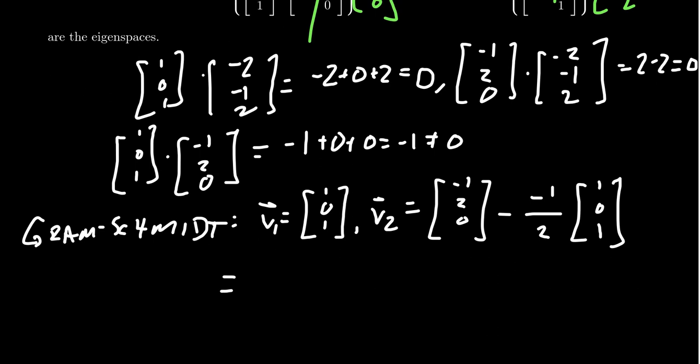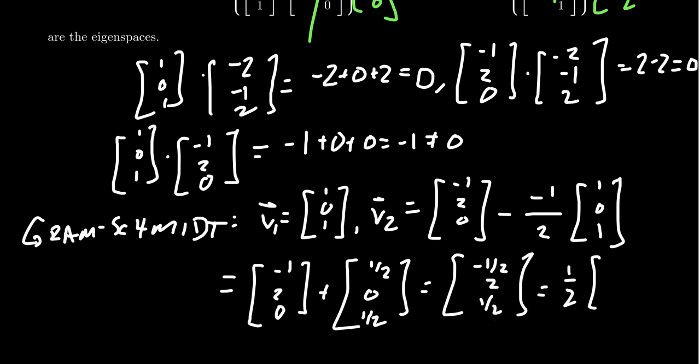If we continue to simplify this, we will end up with negative 1, 2, 0. And then we're actually adding 1 half. So you get 1 half, 0, and 1 half right there. So combining those together, you end up with negative 1 plus 1 half, which will give us negative 1 half, 2 plus 0, and 0 plus 1 half like that. If you don't like the 1 half, you can factor it out again. And so you get negative 1, 4, and 1 right there.